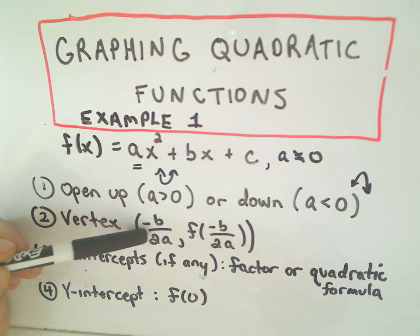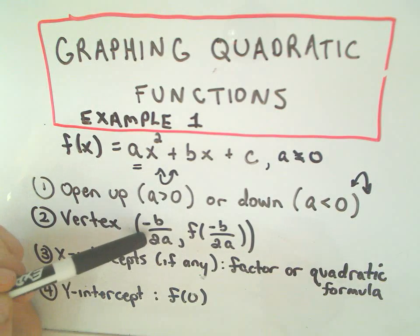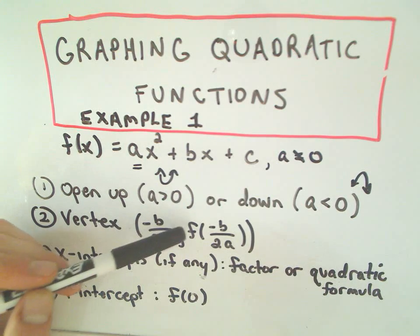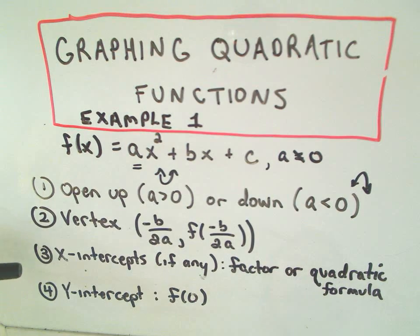we can use the formula negative b over 2a, that'll give us the x-coordinate of the vertex. Plug that into your function, you'll get the y-coordinate.